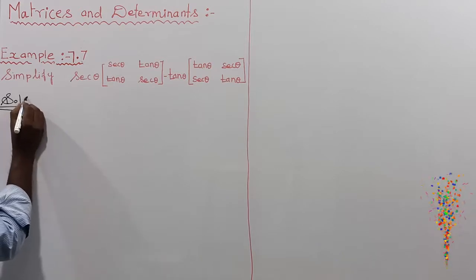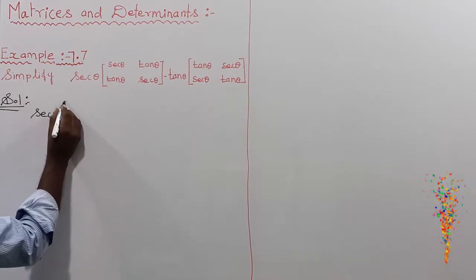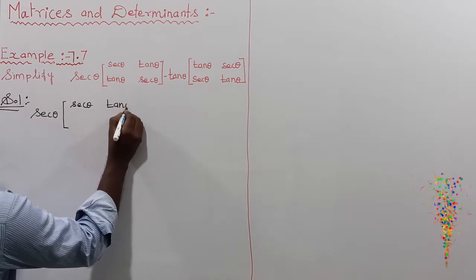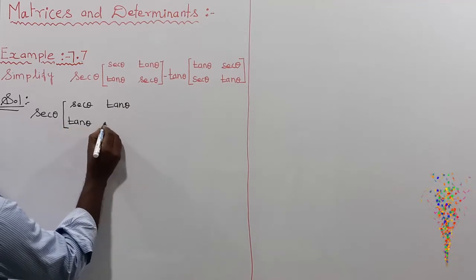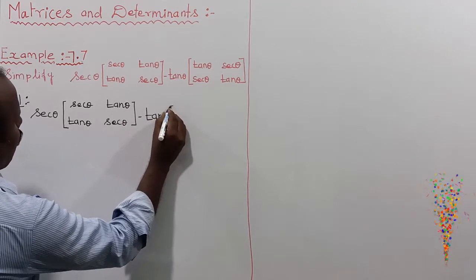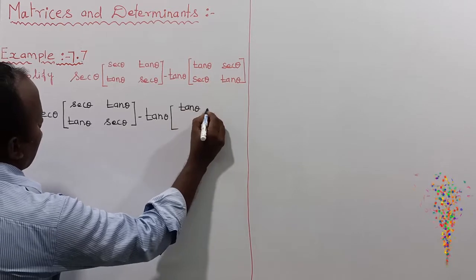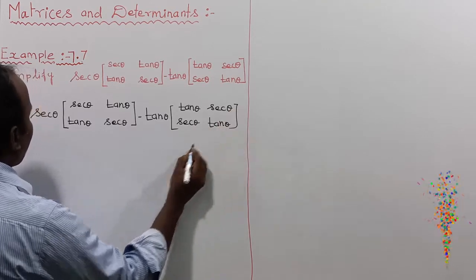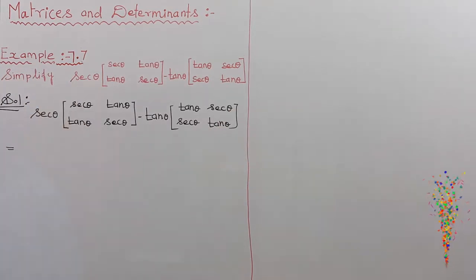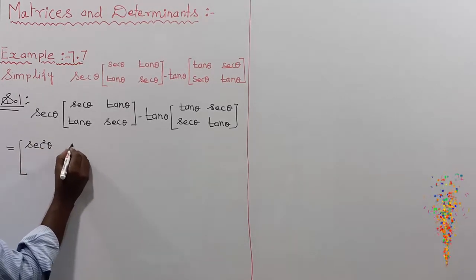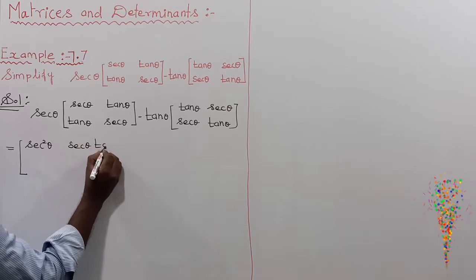First, we expand the multiplication. For the first matrix, sec θ multiplied by sec θ gives sec²θ. Then tan θ multiplied by tan θ is taken inside. So the first expanded matrix contains sec²θ, sec θ·tan θ, tan θ·sec θ, and the corresponding terms.